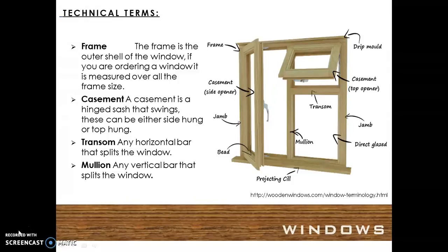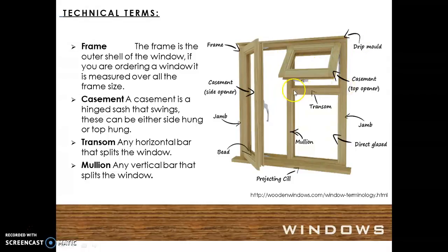A casement is a hinged sash that swings. These can be either side-hung or top-hung. Any horizontal bar that splits the window is a transom. Any vertical bar that splits the window is a mullion.